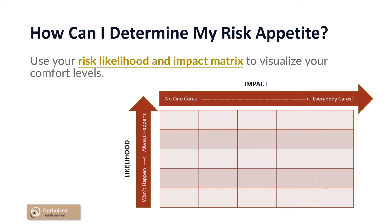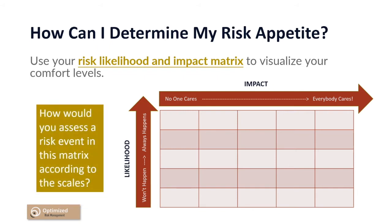Think about how you would feel if you plotted a risk in any one of these squares. Would you consider a risk to be high, moderate, low, or no risk if it was always expected to occur and had an impact so significant that everyone cares? What about somewhere in the middle — is this a high, moderate, low, or no risk level for you? What about the lower left box, where it is not expected to occur frequently and if it did, no one would care? Is this a high, moderate, low, or no risk level for you?